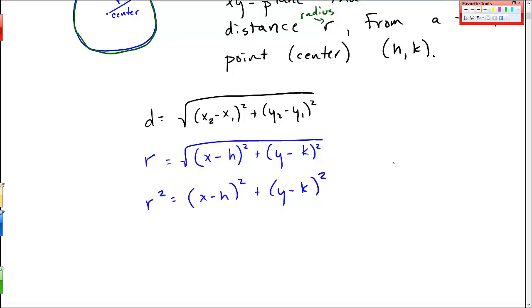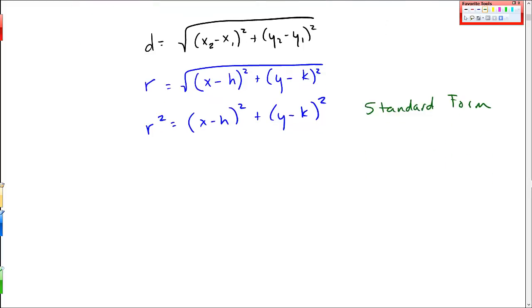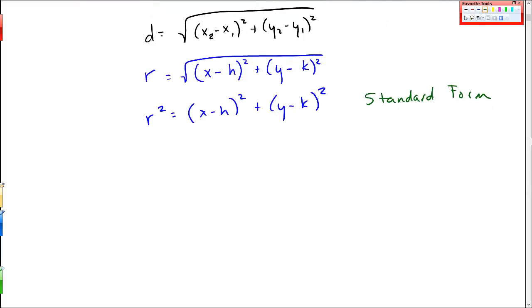This is called the standard form of a circle. The amazing thing about the standard form is you can read off the center and the radius right from the standard form.